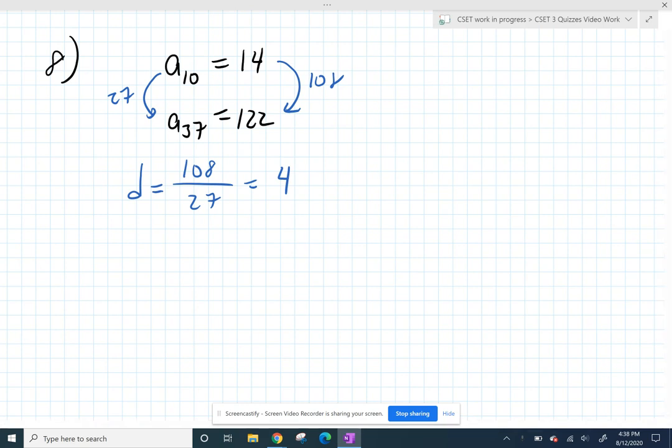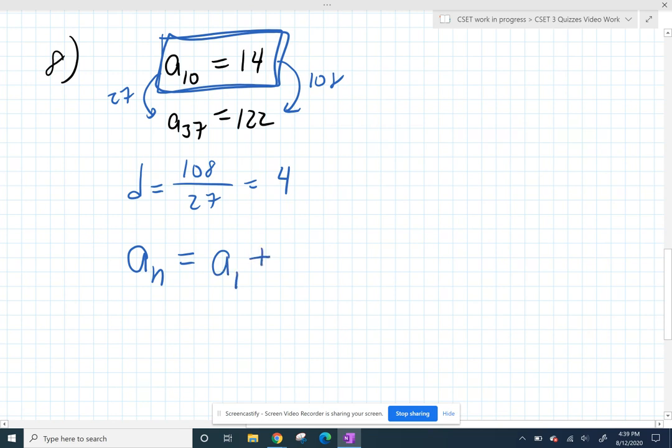I've got my common difference. All I need to know is what my first term is. I can pick either point that I want. I'm going to take this one here because it's smaller numbers. I'm using this idea that I can get any term I want by taking my first term and adding my common difference n minus 1 times.